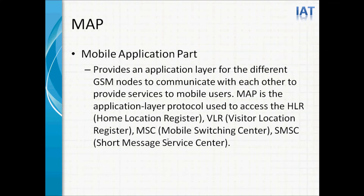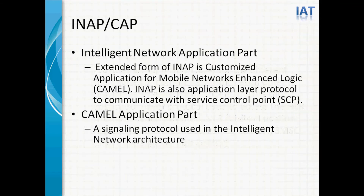On top of TCAP, we have three application parts: MAP, INAP, and CAP. MAP is the Mobile Application Part — the basic application layer for different GSM nodes to communicate with each other to provide services to mobile users. It is the application layer protocol for HLR, VLR, MSC, SMSC, and other GSM nodes.